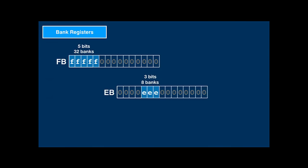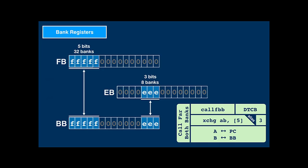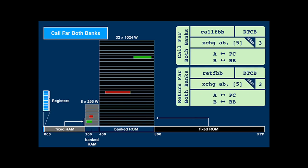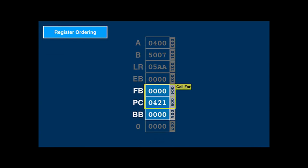The two bank registers only hold five and three bits respectively; the other bits are zero. There's a third bank register, BB (both banks), which mirrors the information from both other bank registers. The Call for Both Banks synonym is a double-word exchange instruction that updates the program counter and both banks. Subroutines usually have their private variables on particular RAM banks. Call for Both Banks passes control to a function on a different ROM bank and also directly switches RAM banks so the callee can immediately access its variables. Return for Both Banks returns to the caller, restoring its RAM bank configuration.